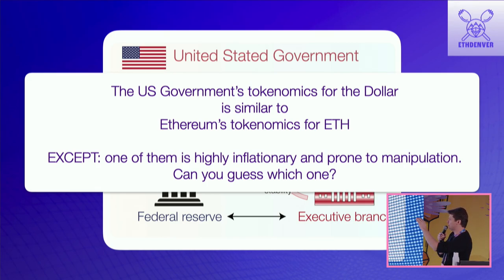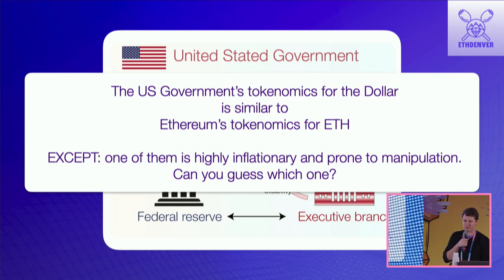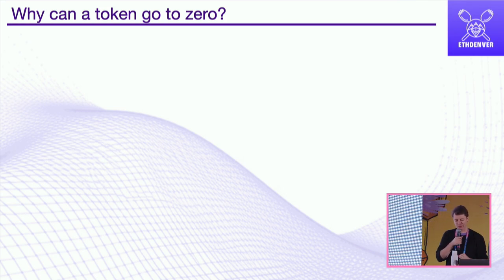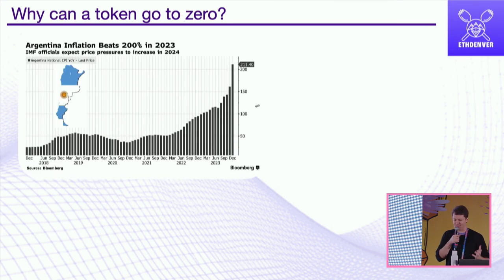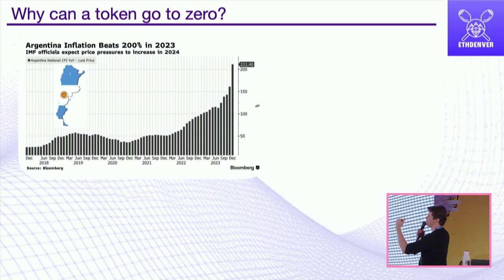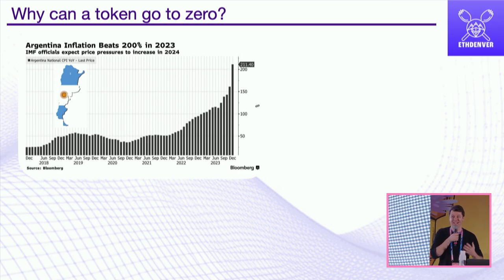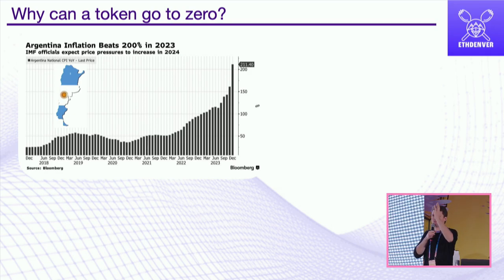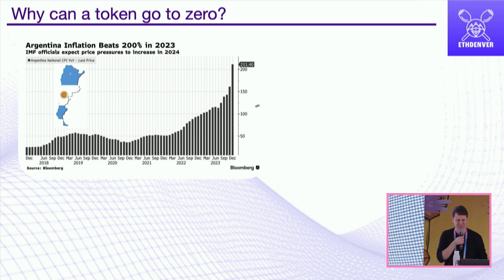One burning question: one of these two systems is highly inflationary and prone to manipulation — I'll give you the answer at the end. Why can a token go to zero? Not necessarily the US dollar, but any currency can go through bouts of inflation. Argentina, for the past decade, has seen more than 50% inflation per year for 10 years; this year they hit 200%. That's the value of your currency going down — inflate the supply and net buying power goes to zero.